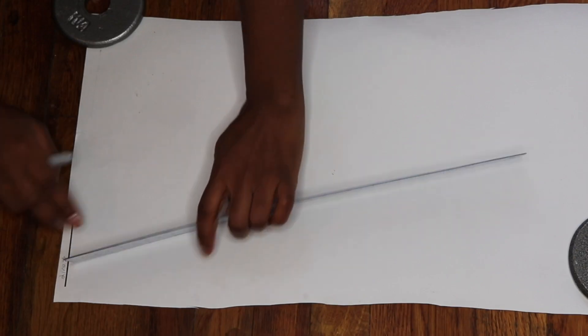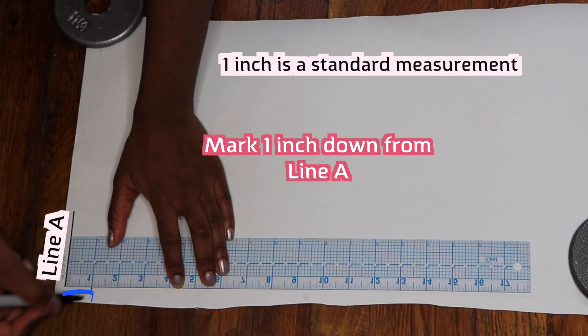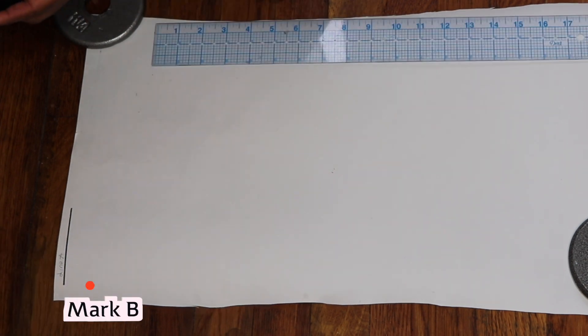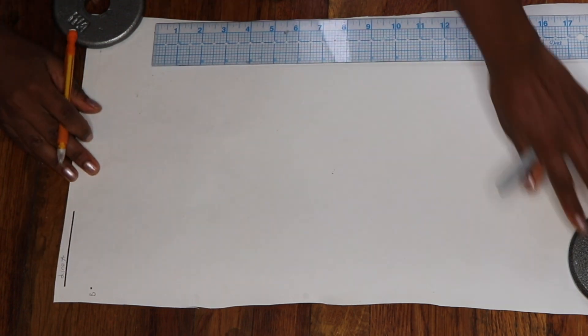Draw a three inch horizontal line at the top of your paper and we'll call this line A. From the beginning of line A, measure and mark one inch down - we'll call this mark B. Be sure to use the right angle of your ruler to make sure that the one inch mark is accurately placed.